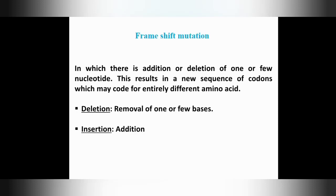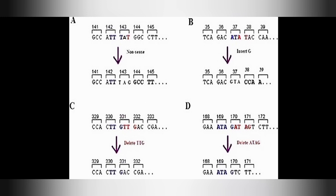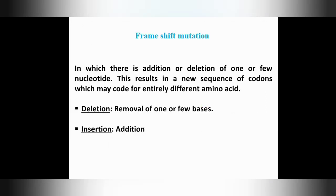The second type is frame shift mutation. During translation, reading frames exist — three bases form a codon. For example, GCC ATT — these three bases form one codon, each codon has a specific tRNA, and that tRNA brings a particular amino acid. Each codon codes for a specific amino acid.